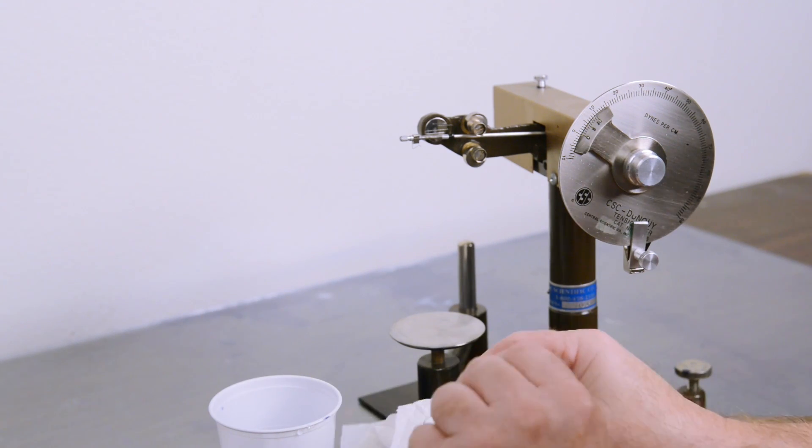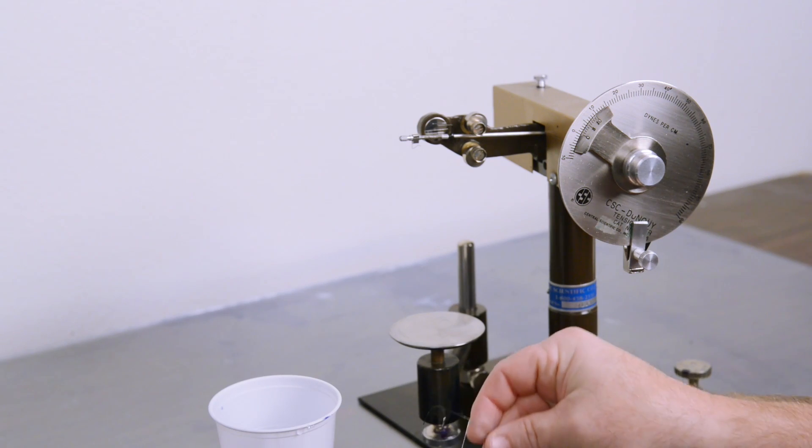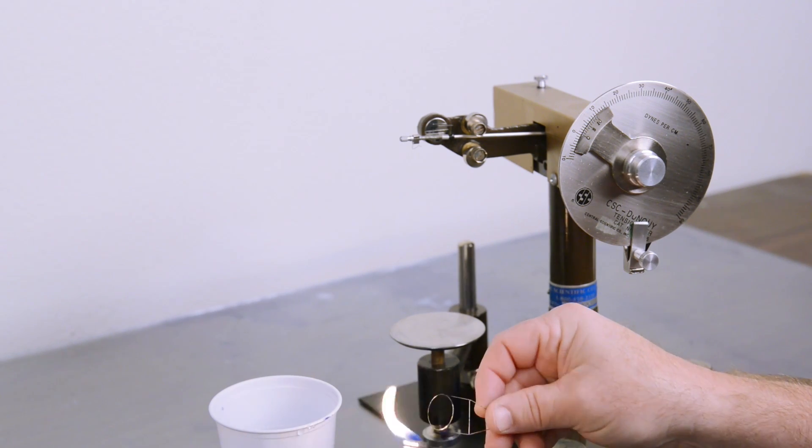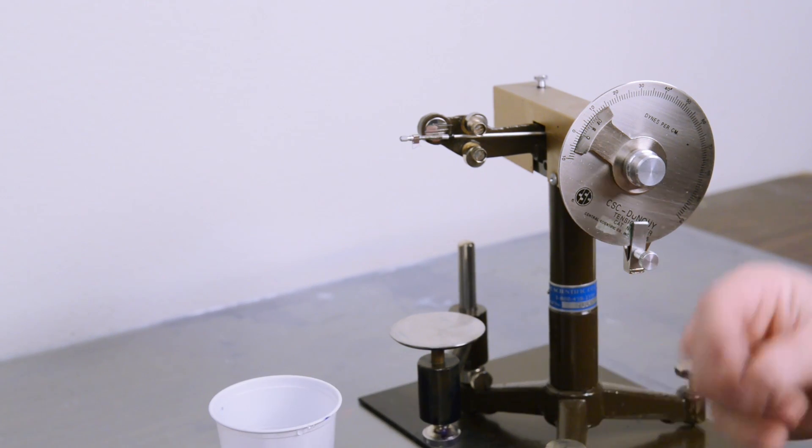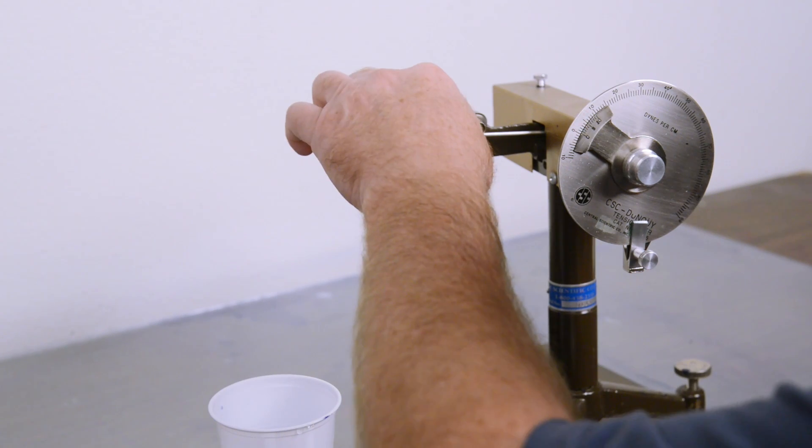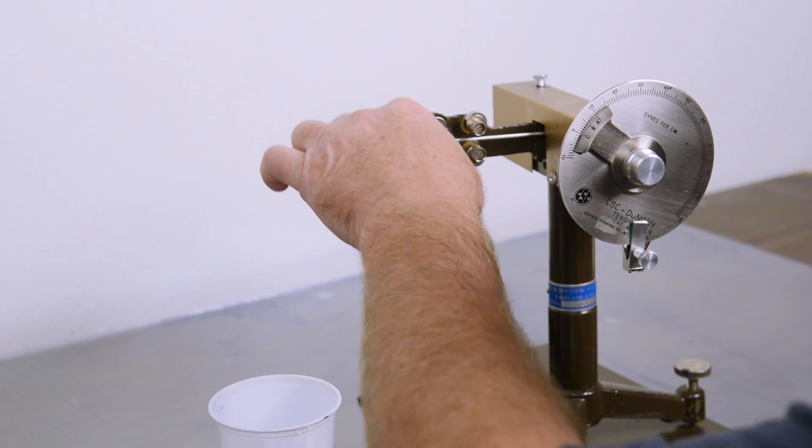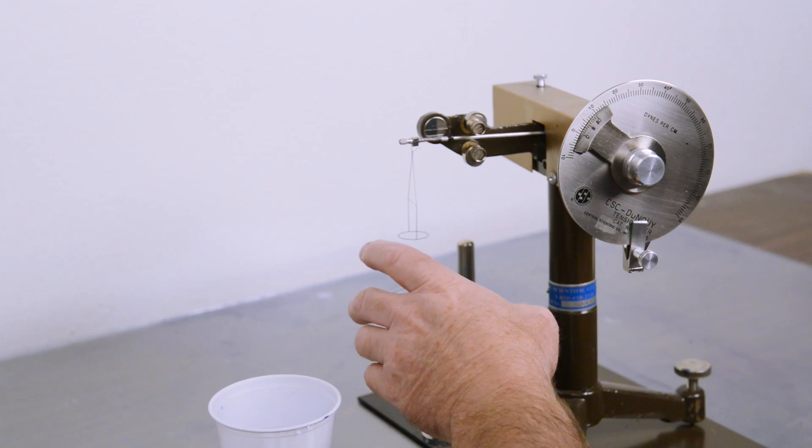We will dry it off a little bit, flame it so there is no contamination from one thing to another. Put it back on the arm. New petri dish.